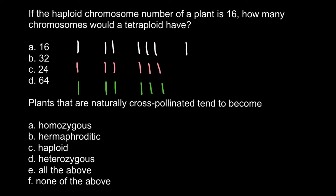We normally do not see polyploidy in animals, but plants can be tetraploid and have four sets of chromosomes, with each chromosome found in four copies. If you think the answer requires multiplying 16 by 4 because this is the haploid number and a tetraploid has four sets, that would give 64 — but this is not the correct answer. The answer is not D, not 64 chromosomes.